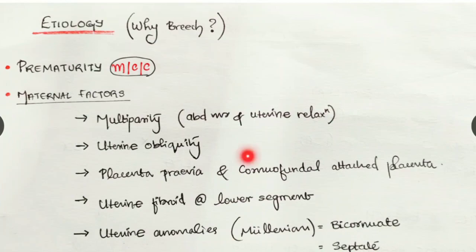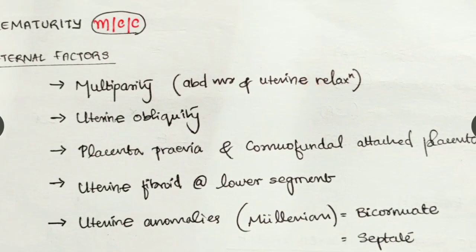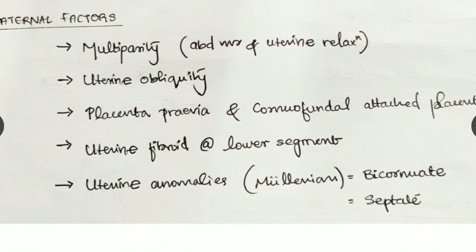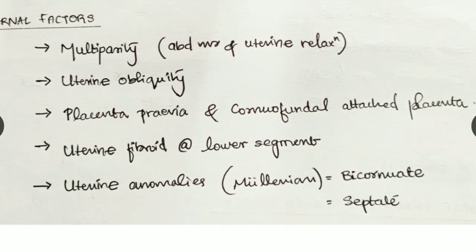Maternal factors include multiparity — during each delivery, the abdominal and uterine muscles are stretched and then become lax, losing their contour, which affects the child's position. Uterine obliquity, where the axis of the uterus is abnormal, also affects the lie. Placenta previa — a low-lying placenta close to the internal os — reduces the space for the baby's head in the lower segment, altering the position.